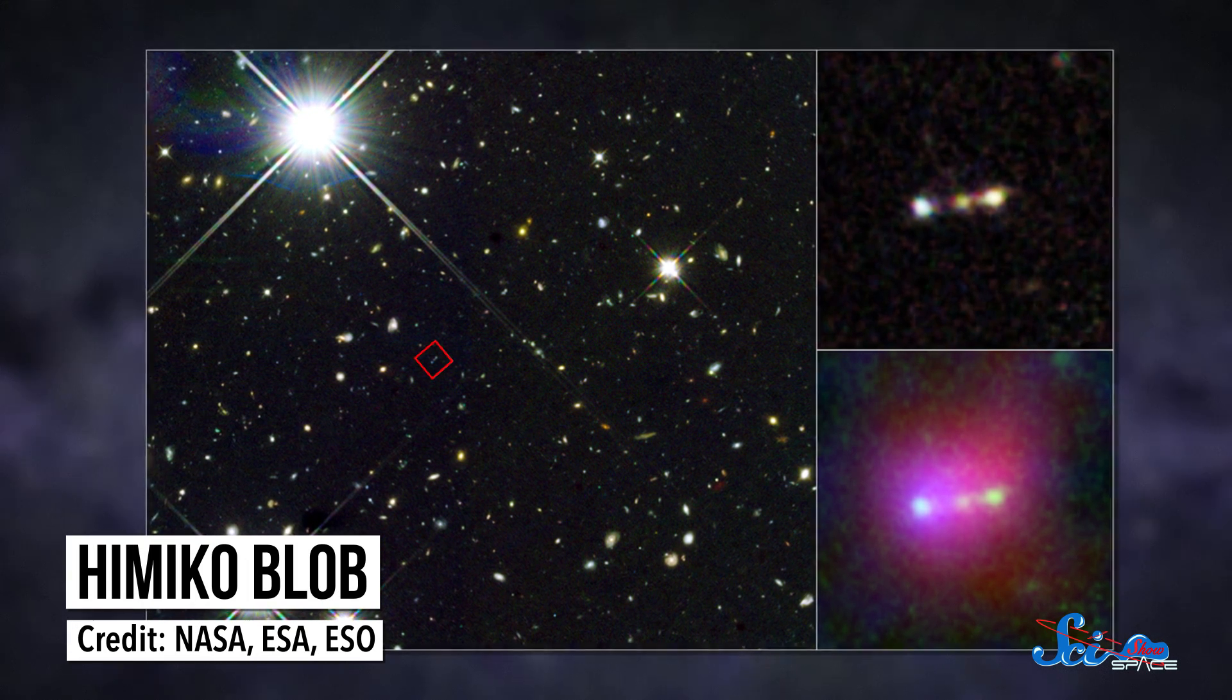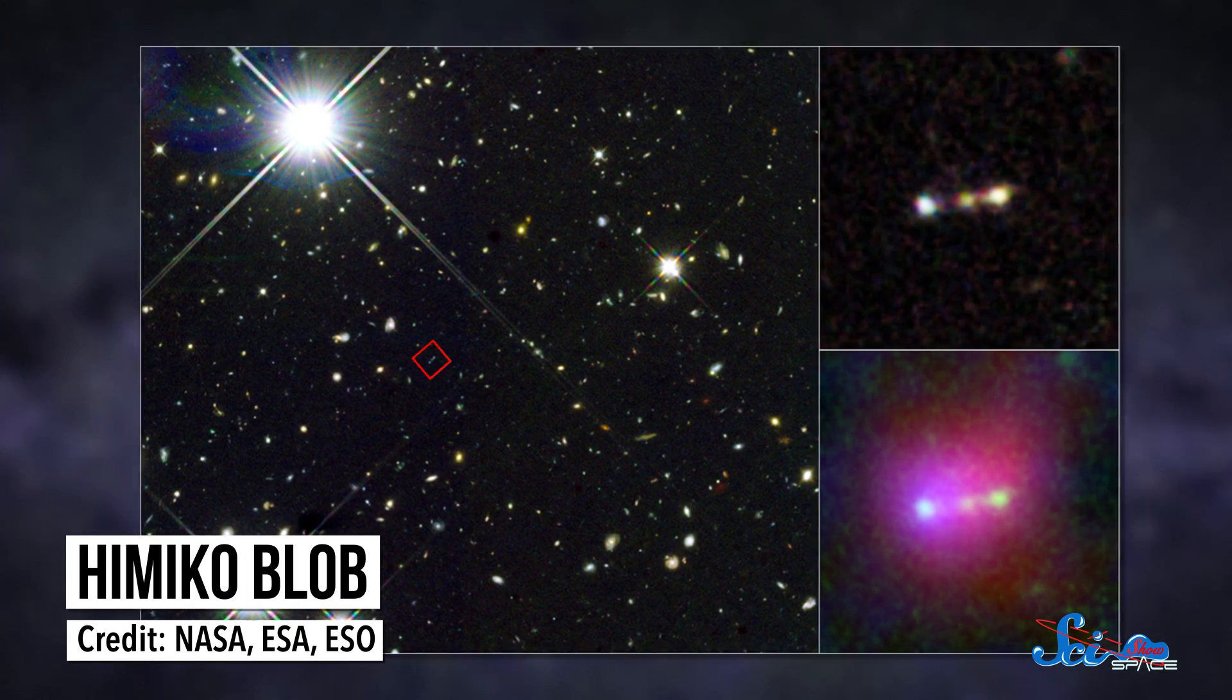All of that just from looking up at the sky. One of those early galaxies is known as the Himiko Blob, and it's pretty weird as blobs go. It's huge, it's bright, and it's really, really old.